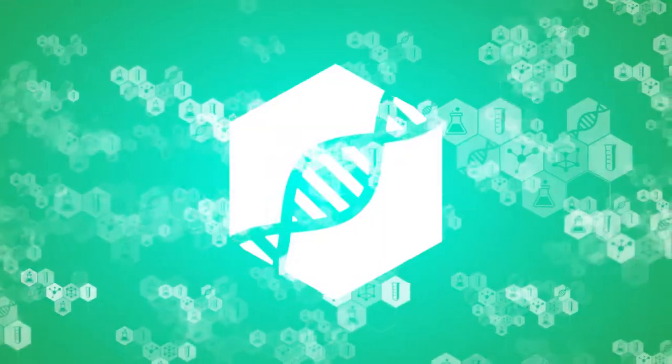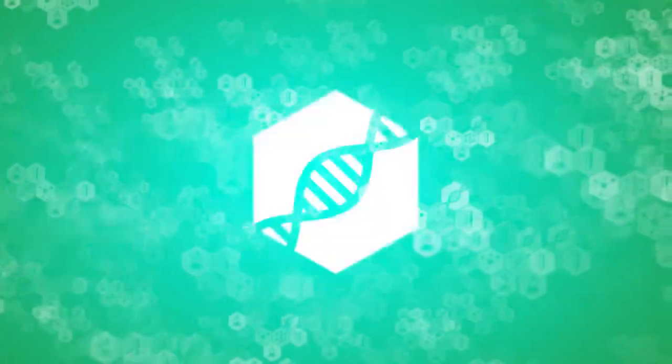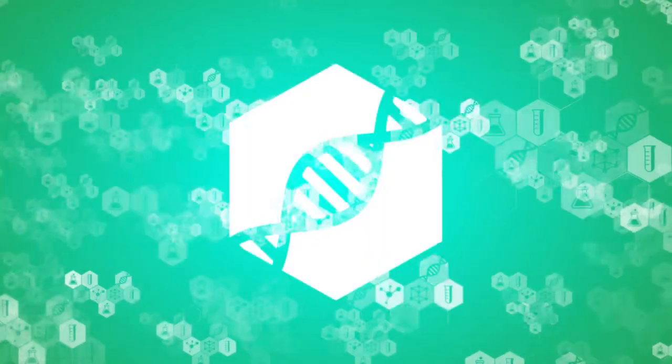To recap, viral DNA in the same place in the DNA of every cell means that it is inherited. Viral DNA in different places in only some of your cells means that you have caught a virus from the environment.